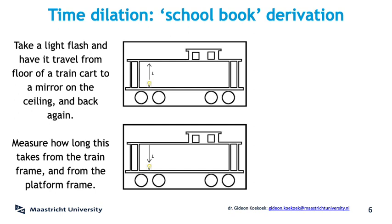How many seconds does it take the light ray to make the round trip? From the inertial system of the train, this is a simple exercise. If the height of the train is L metres and the light goes with velocity c, then it takes 2L over c seconds to make the round trip — times 2 as the light has to go back up and down. This amount of time is conventionally called the proper time, given by the Greek letter tau. Proper time is the time measured in the inertial system in which the beginning point and end point of a process happen at the same location. So the proper time tau is given by 2L over c.